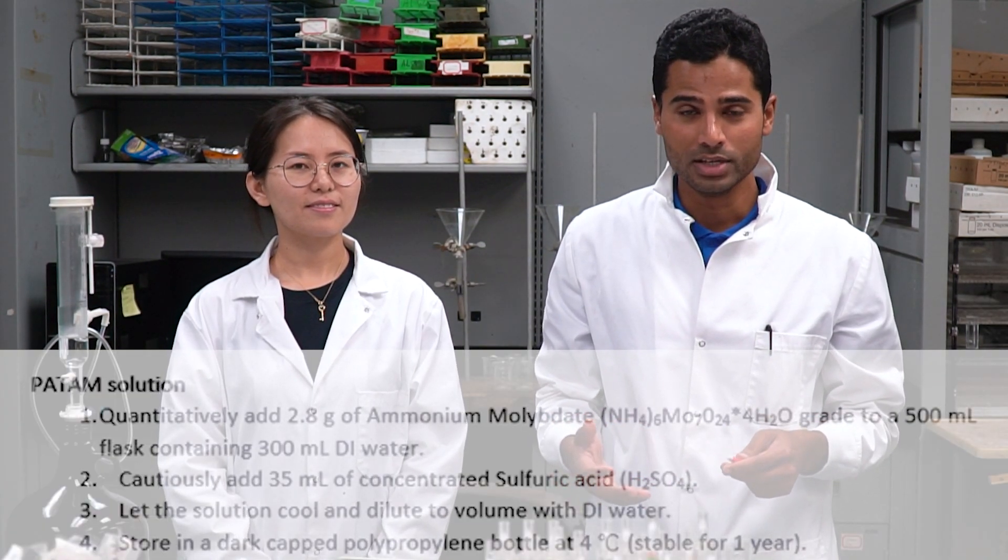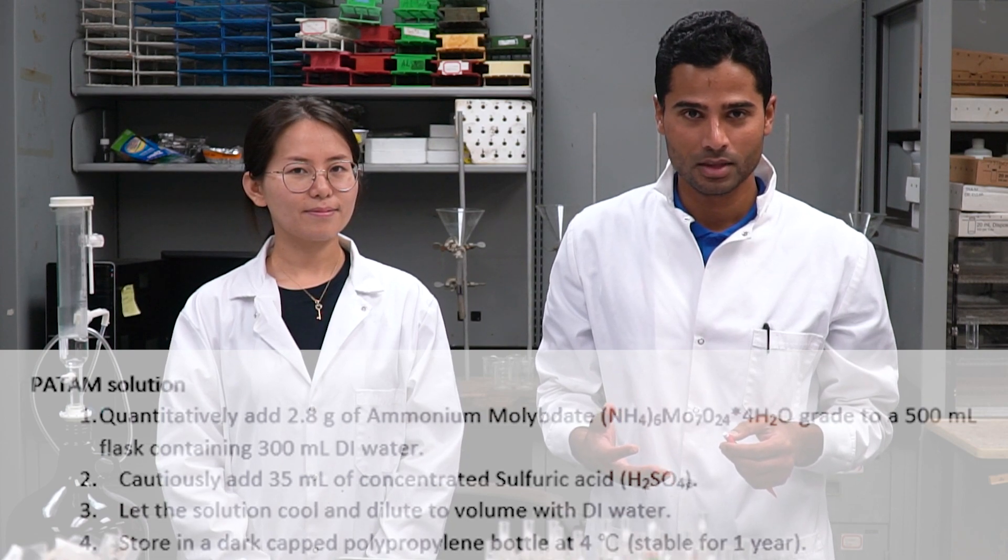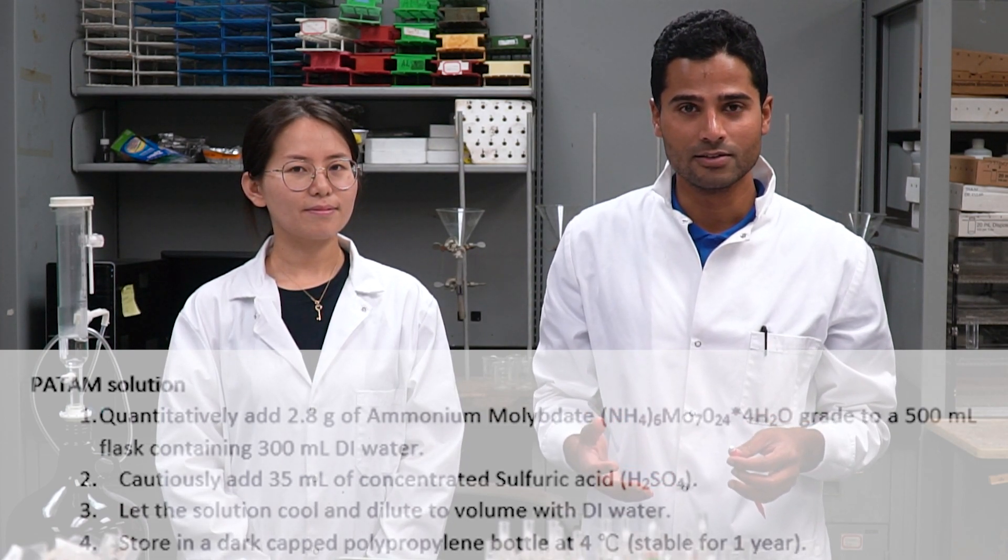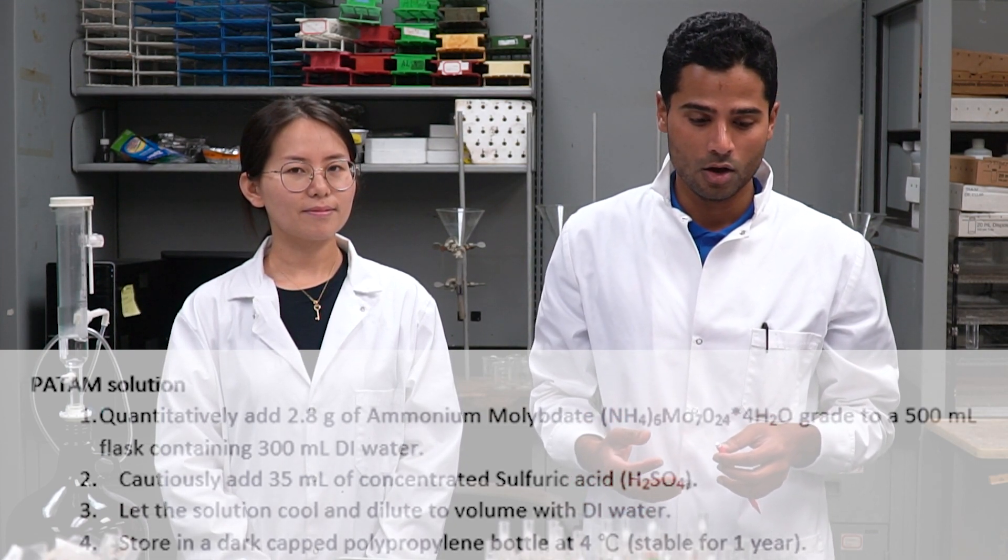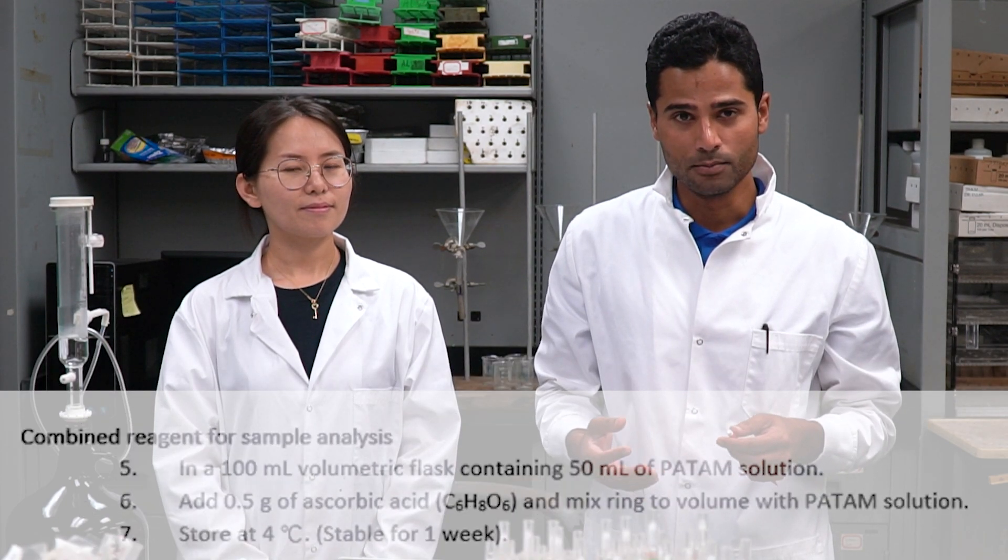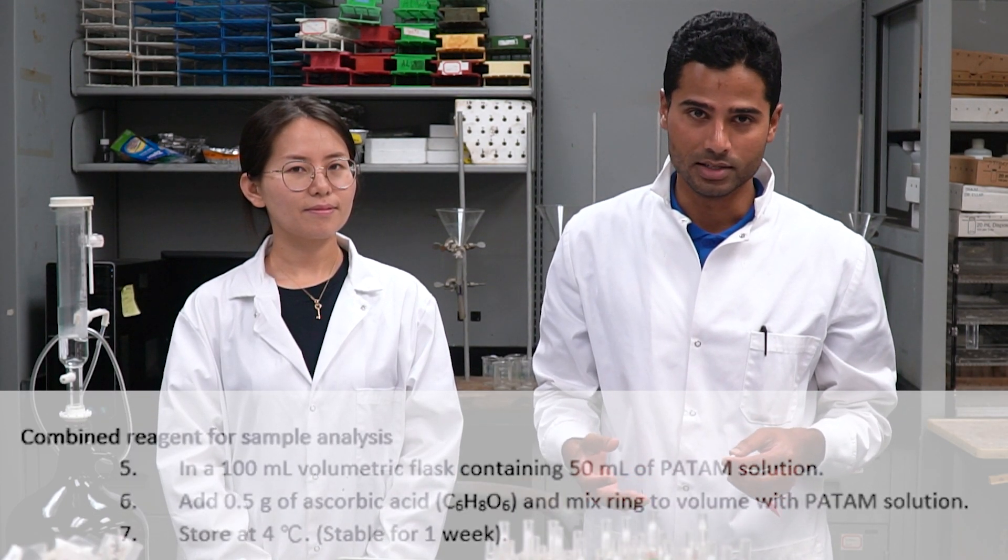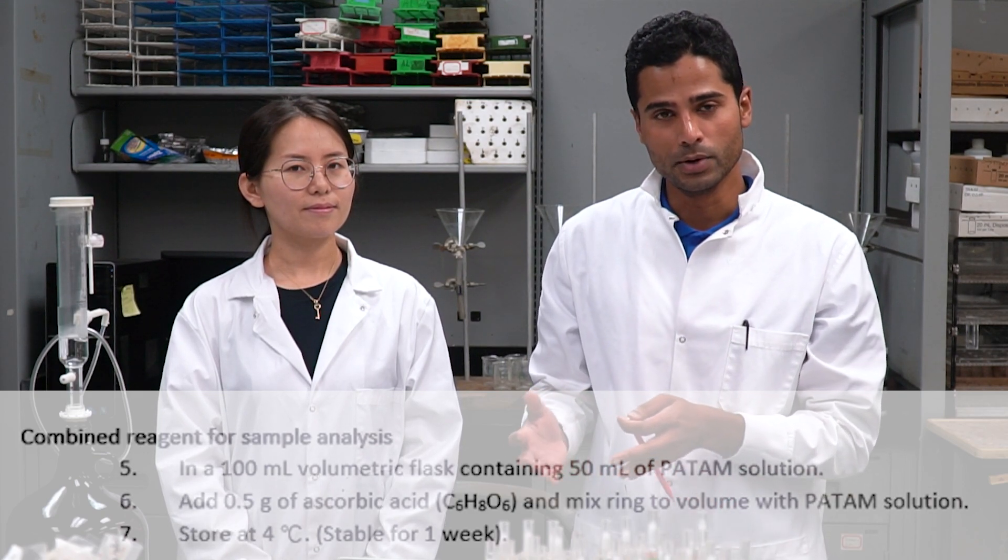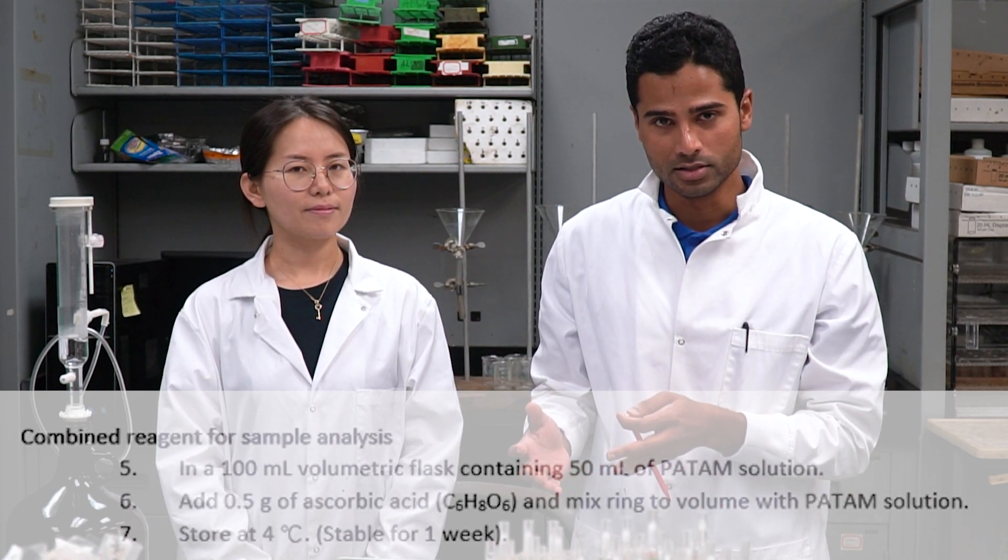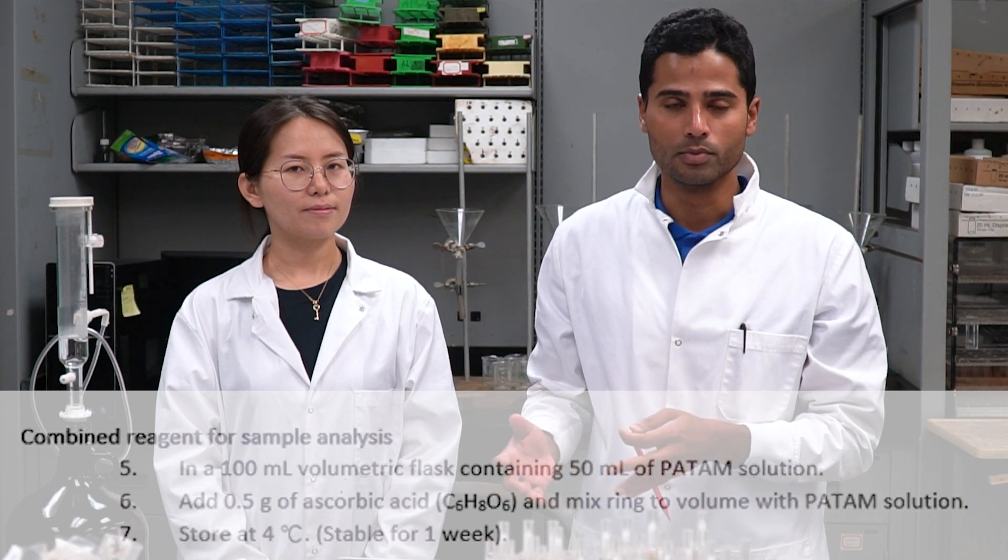For soluble P extraction, we need chemicals and the name of the chemical is PATOM solution. For that, we need ammonium molybdenate and sulfuric acid. From PATOM solution, we will prepare combined reagent using ascorbic acid.